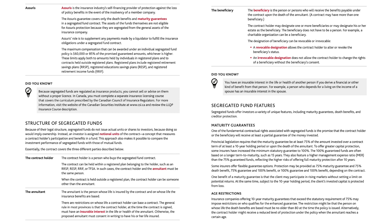Segregated fund features. Segregated funds offer investors a variety of unique features including maturity guarantees, death benefits, and creditor protection. Maturity guarantees. One of the fundamental contractual rights is the promise that the contract holder or the beneficiary will receive at least a partial guarantee of the money invested. Provincial legislation requires that the maturity guarantee be at least 75% of the amount invested over a contract term of at least a 10-year holding period or upon the death of the annuitant. Some insurers have increased the minimum statutory guarantee to 100%. The 100% guarantee funds are often based on a longer term to maturity such as 15 years, and feature a higher management expense ratio than the 75% guaranteed funds.